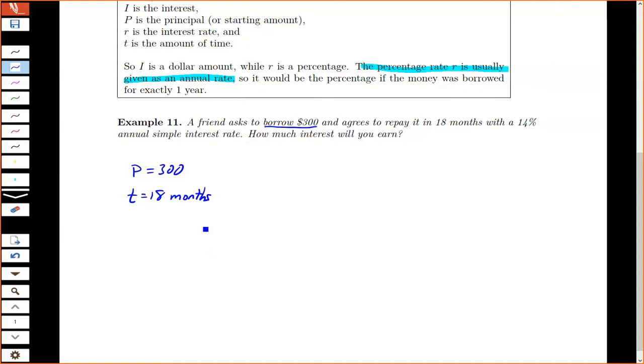Here's the thing about time, though. Since the interest rates are given as an annual rate, it's usually easiest to make sure that my time is also in those same units. So what we can do is say, let's convert that to years. So my conversion, I want to multiply by a fancy form of one.